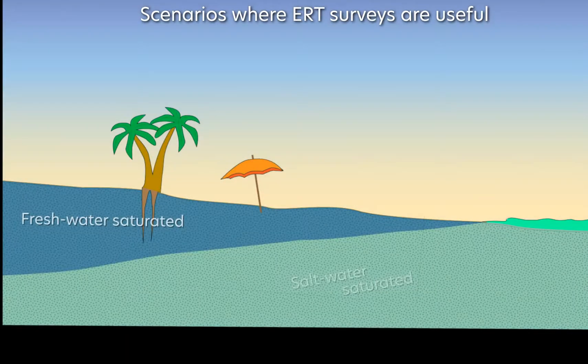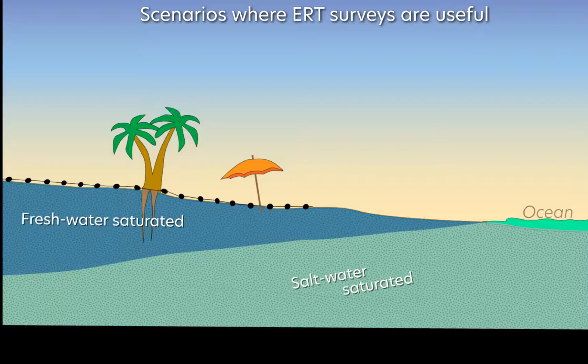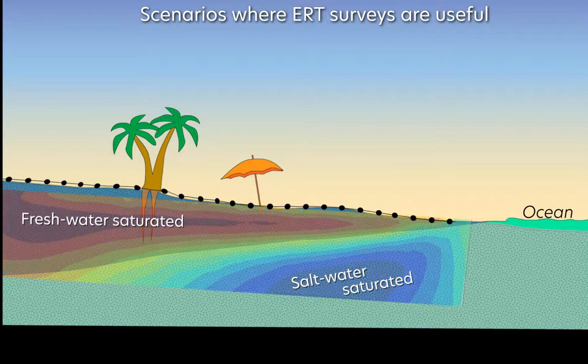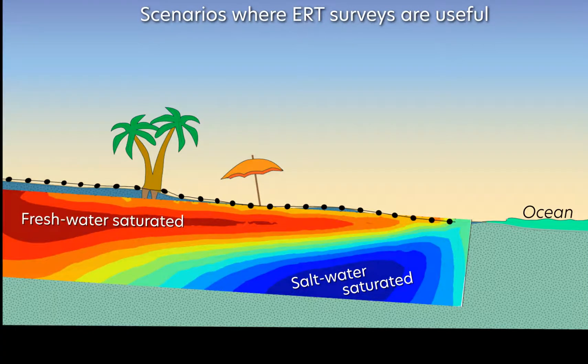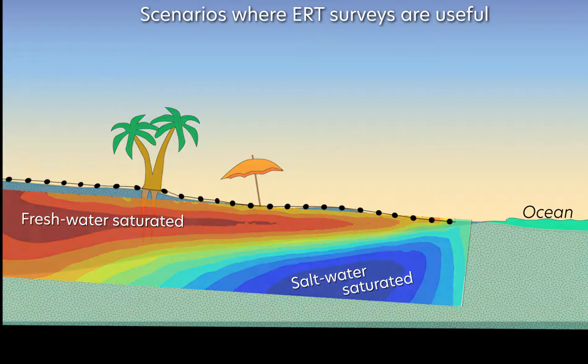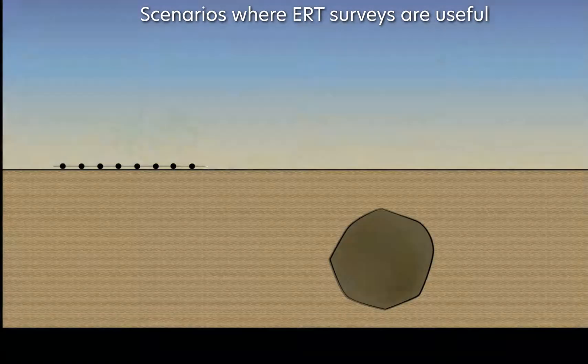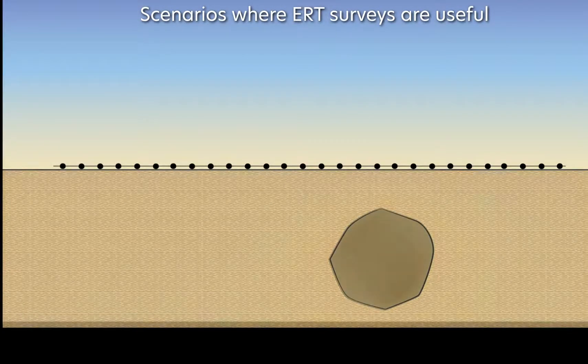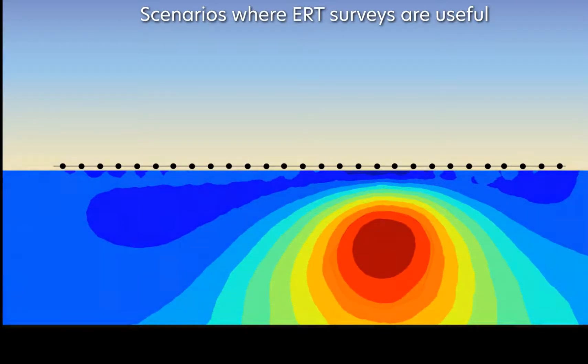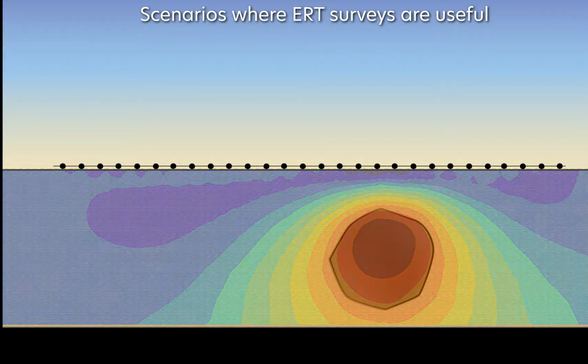Saltwater has an extremely low resistivity, so ERT is a good method for locating the freshwater-saltwater interface on coastlines. An air-filled cave will have a very high resistivity, so scientists have used ERT to map caves from the surface.